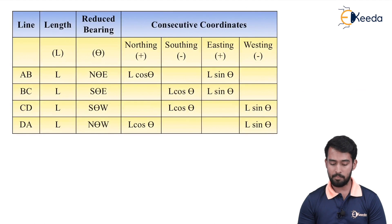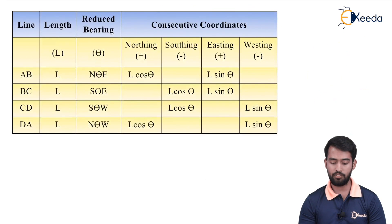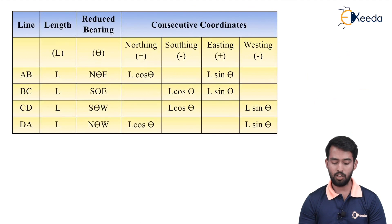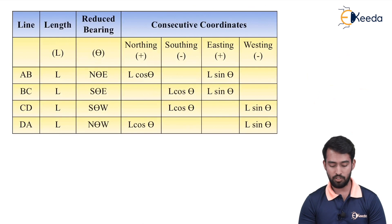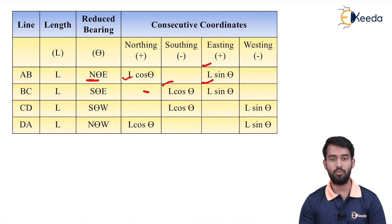Continuing the previous example, we have calculated the independent coordinates — latitude and departure. Now we are finding out consecutive coordinates. Consecutive coordinates are divided into each quadrant: positive means northing, negative means southing. Same for departure — easting is positive, westing is negative. For the first bearing, reduced bearing is north-east, so northing and easting. Next line, south-east: southing and easting. Accordingly we assign the signs — north positive, south negative, east positive, west negative.